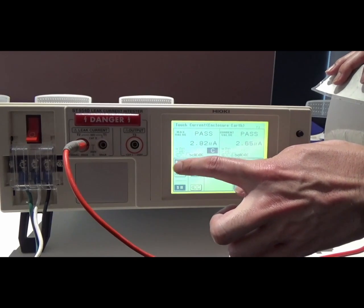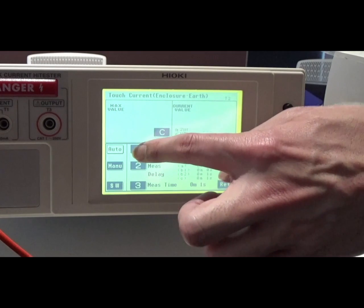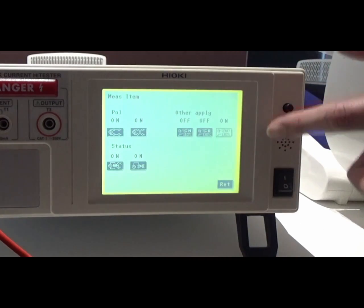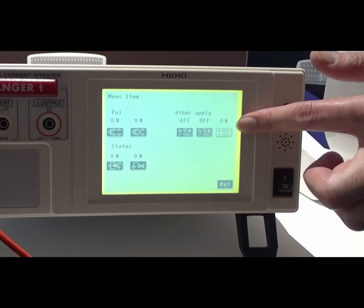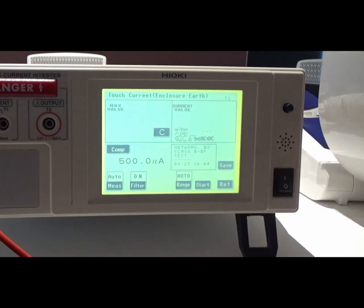I select auto. First, I select measured item. We basically select on to all items. Since this medical equipment does not have any signal inputs and output functions, I set this item to off. Hit return key and hit return key again.